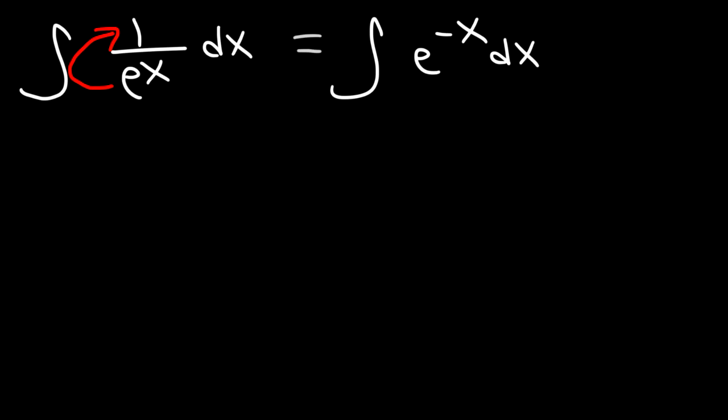And then at this point, we can use u substitution. So we're going to make u equal to negative x, so du is going to be the derivative of negative x, which is negative 1 times dx.